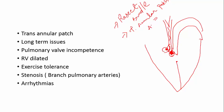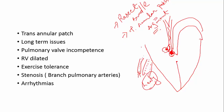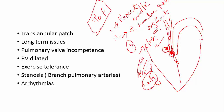They will put a patch to augment it — put scissors across, open it up, put a patch. So you've gone across the valve, which will make your pulmonic valve leaky — that's one complication already. The third thing to do is put a patch to close the VSD. So that's your TOF repair: three main steps — resecting the bundle, transannular repair, and closing the VSD.